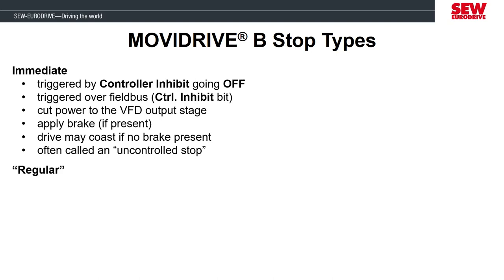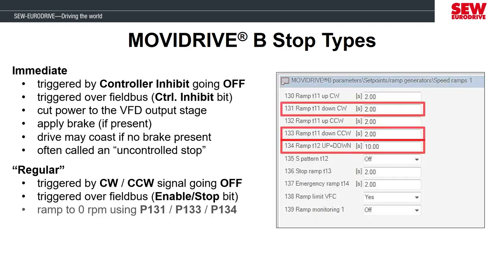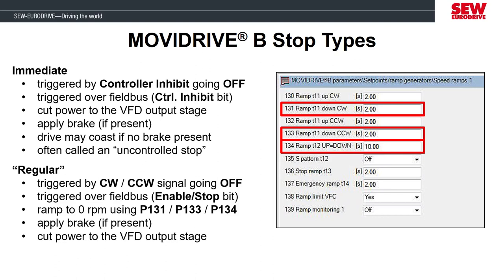The next stop method is a regular or normal stop. We saw that in the last lab when we removed the direction of rotation inputs. This was a controlled stop because the motor was decelerated to zero RPM using the ramp down times in the parameters. Then the brake was applied to hold the motor in position, and since this motor had a brake, the output stage of the VFD was cut off to the motor because the brake will hold the motor in position.